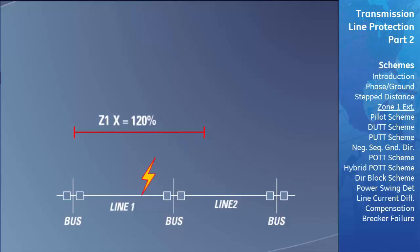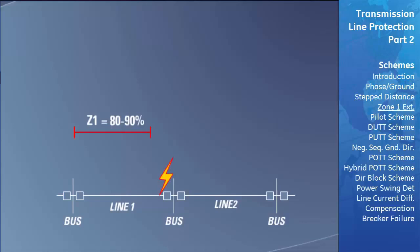Once the breaker is opened and the fault cleared, the relay automatically re-closes the breaker and re-energizes the line. After re-closing, the relay uses the standard Zone 1 characteristic and underreaches to protect only its own transmission line. If the fault was permanent and located within the newly shortened Zone 1, the relay will trip again to clear it. If the fault was transient, the first trip removes the fault and power transmission resumes. If the permanent fault reappears outside the shortened Zone 1, Zone 2 protection will clear it after its time delay, or the adjacent line's relay will clear it in its own Zone 1.